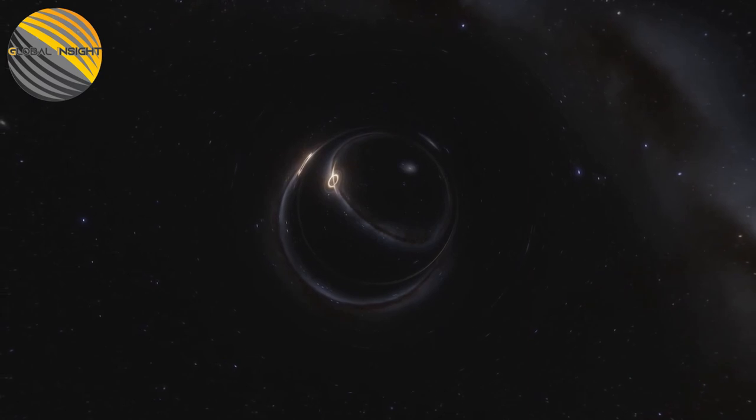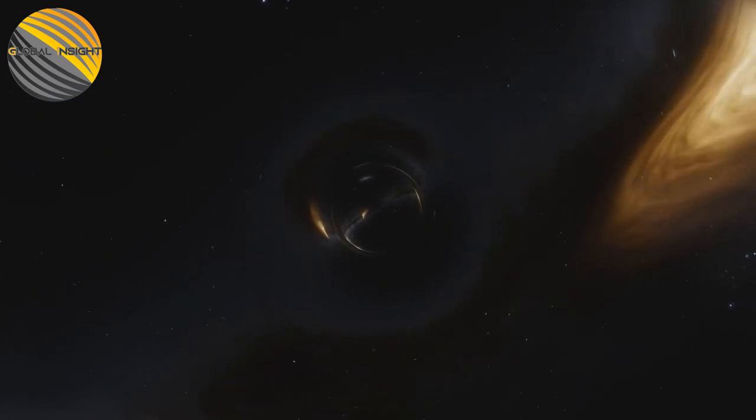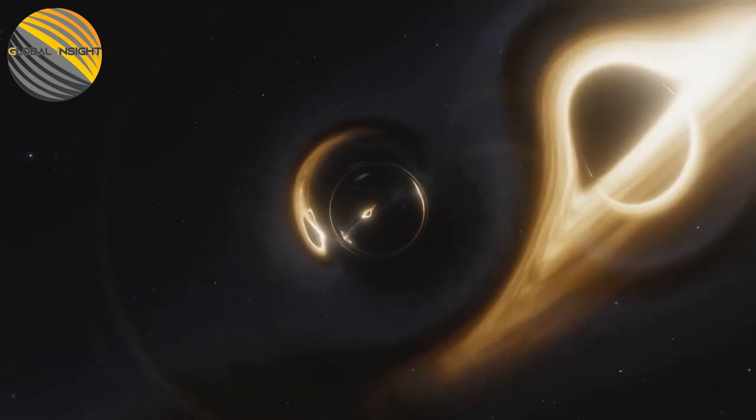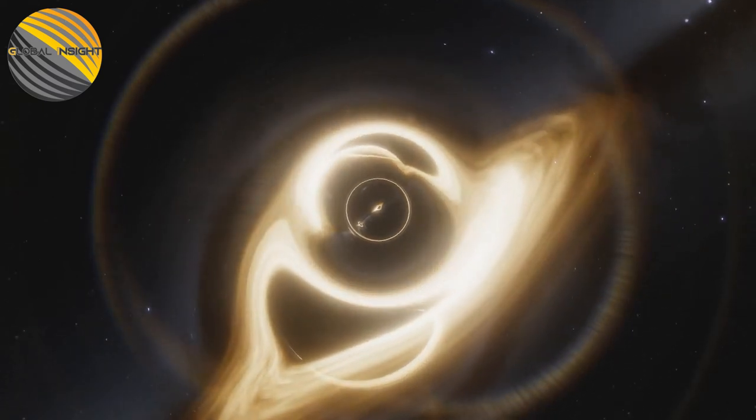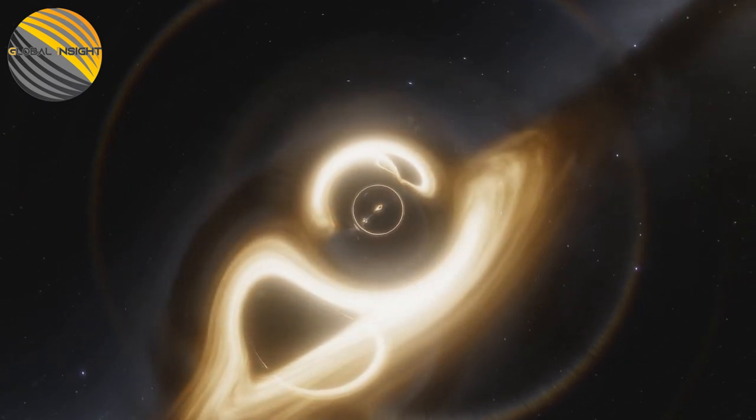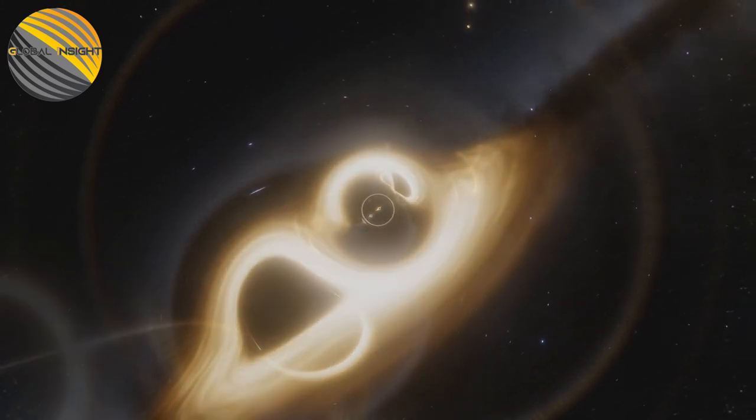Supermassive black holes might be the result of hundreds or thousands of small black holes that consolidate. Huge gas clouds could likewise be dependable, imploding together and quickly accumulating mass. A third choice is the collapse of a stellar cluster, a gathering of stars generally falling together.